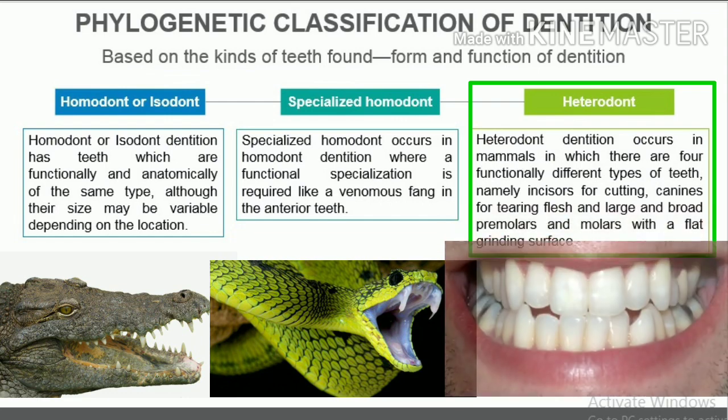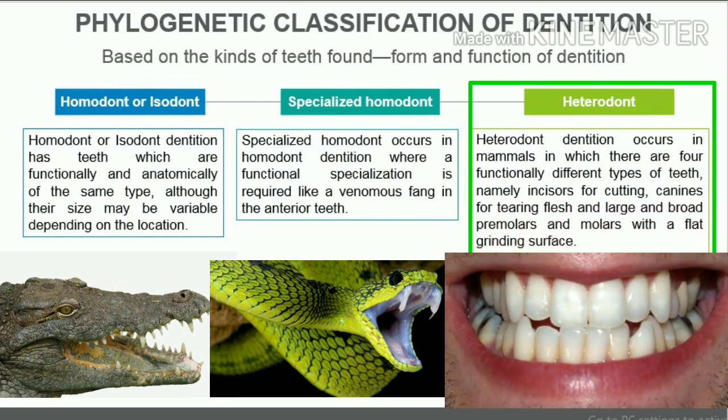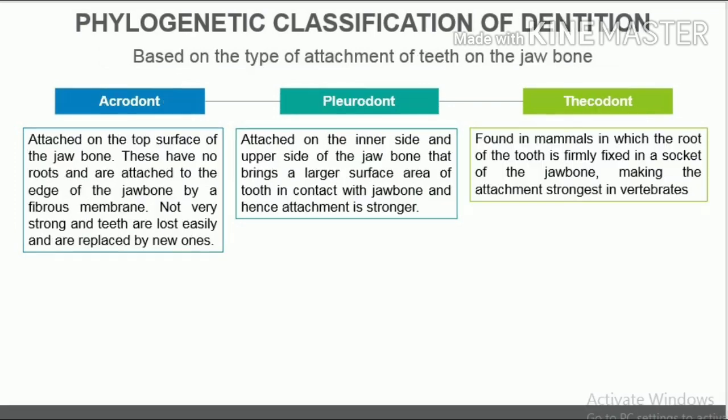Heterodont dentition occurs in mammals in which there are four functionally different types of teeth: incisors for cutting, canines for tearing flesh, and large broad premolars and molars with a flat grinding surface.